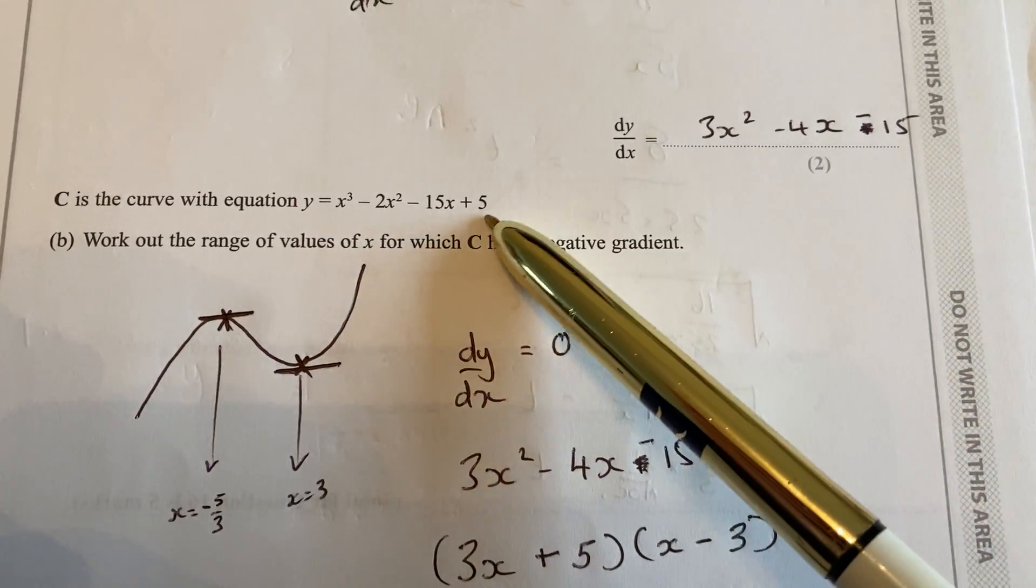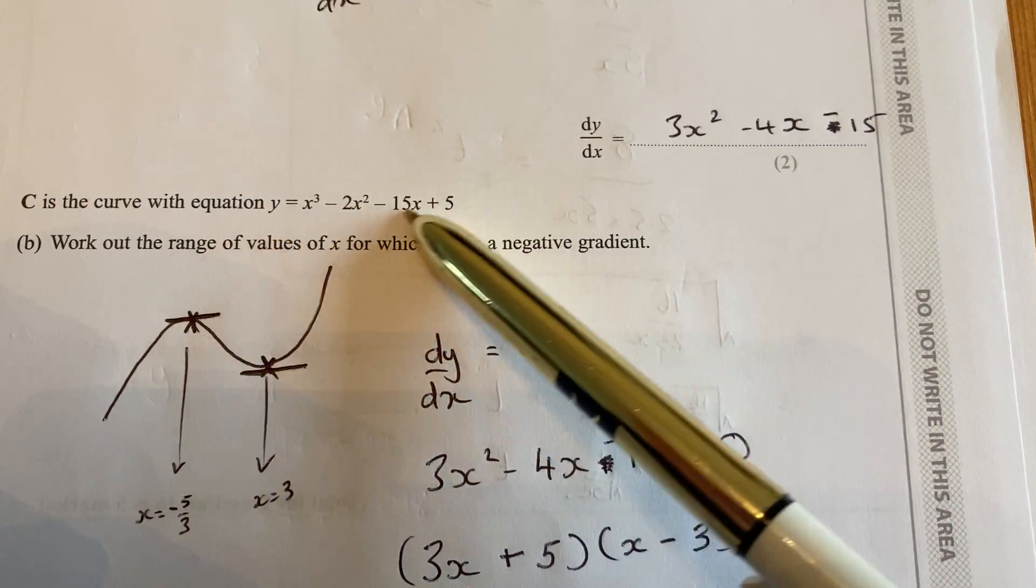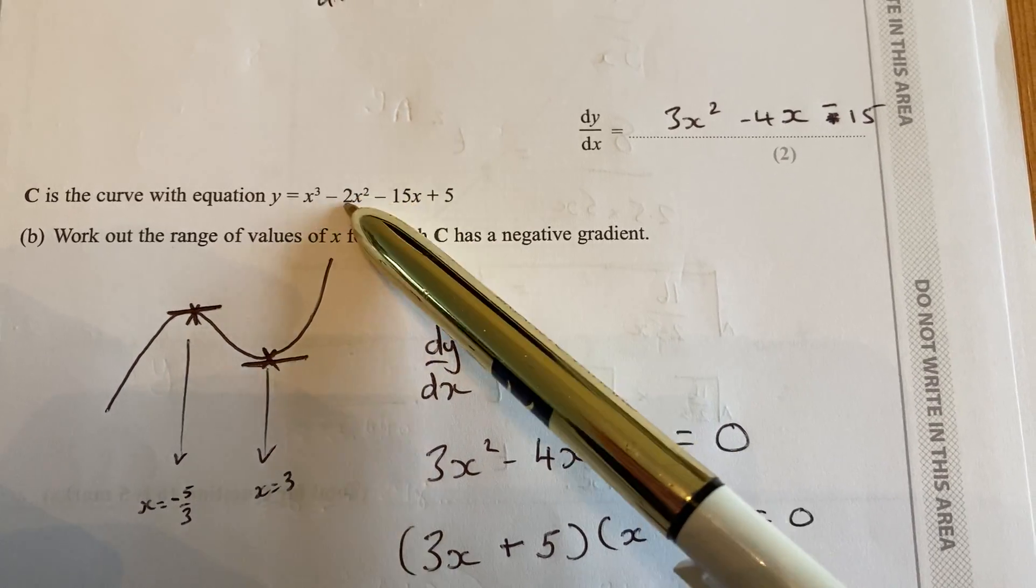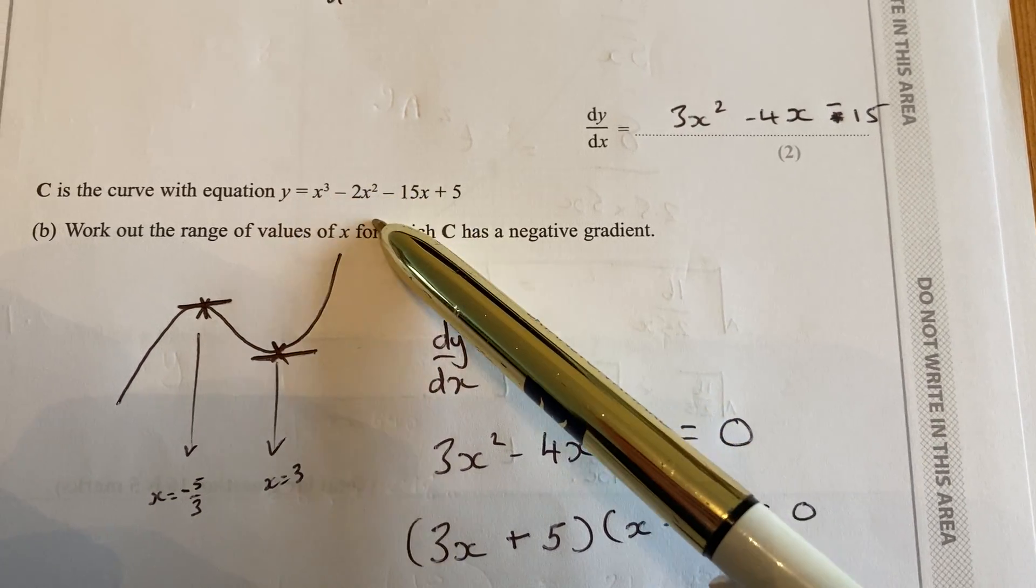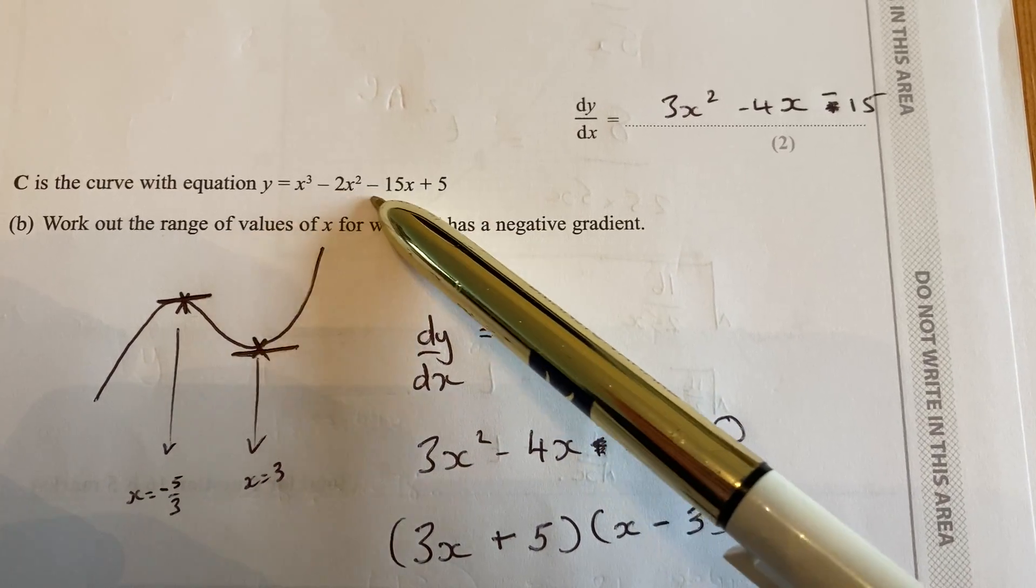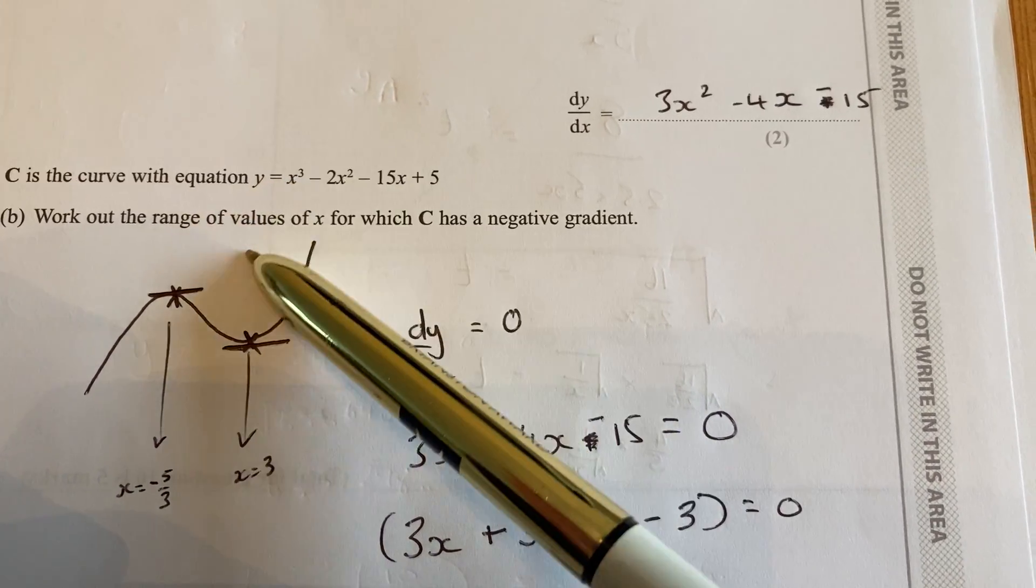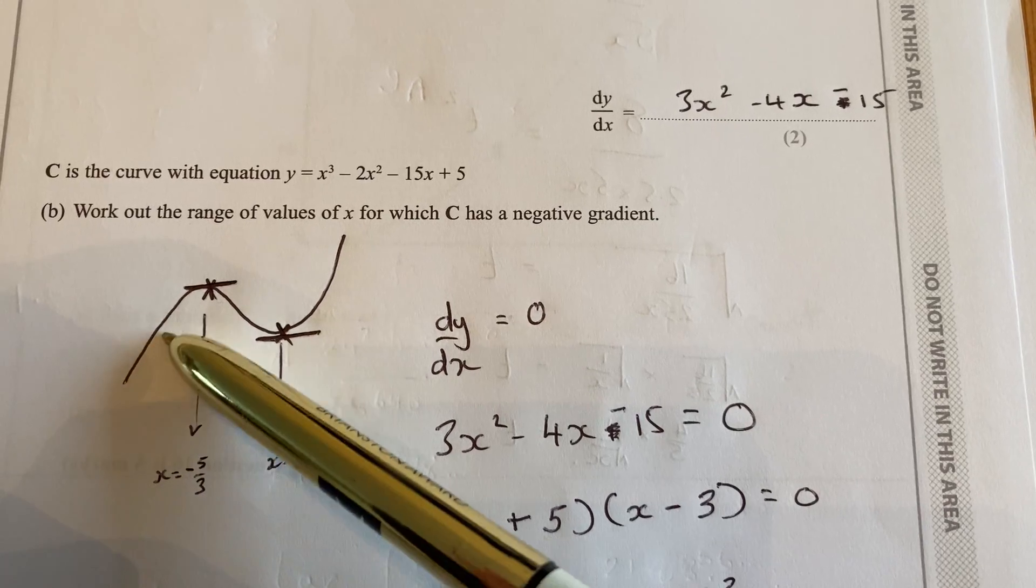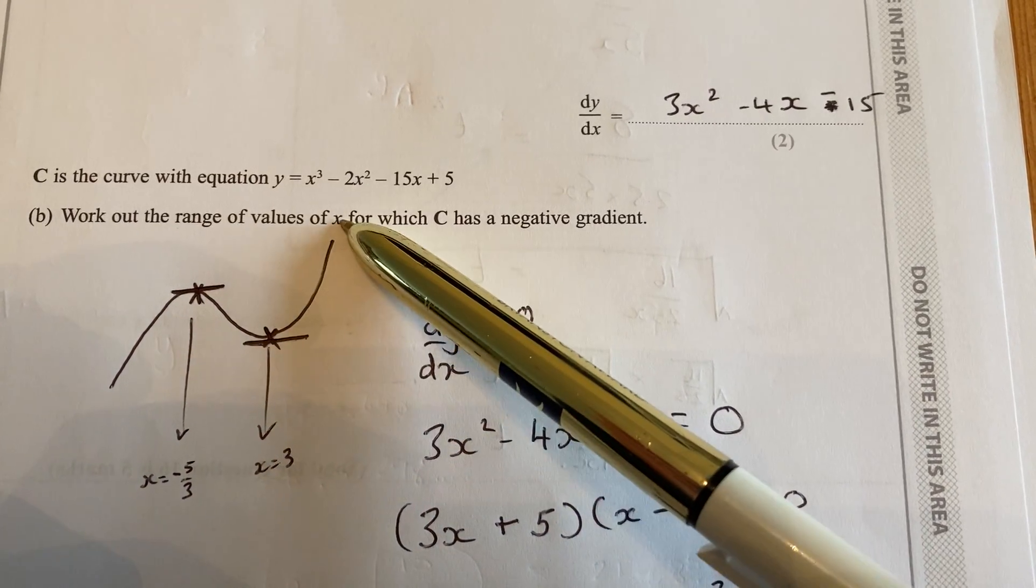In part b, we're given that same equation, and we're asked to find out where that equation has a negative gradient. Well, this equation is a cubic, a positive cubic. So it's got this shape, it goes up and then down and then back up again.